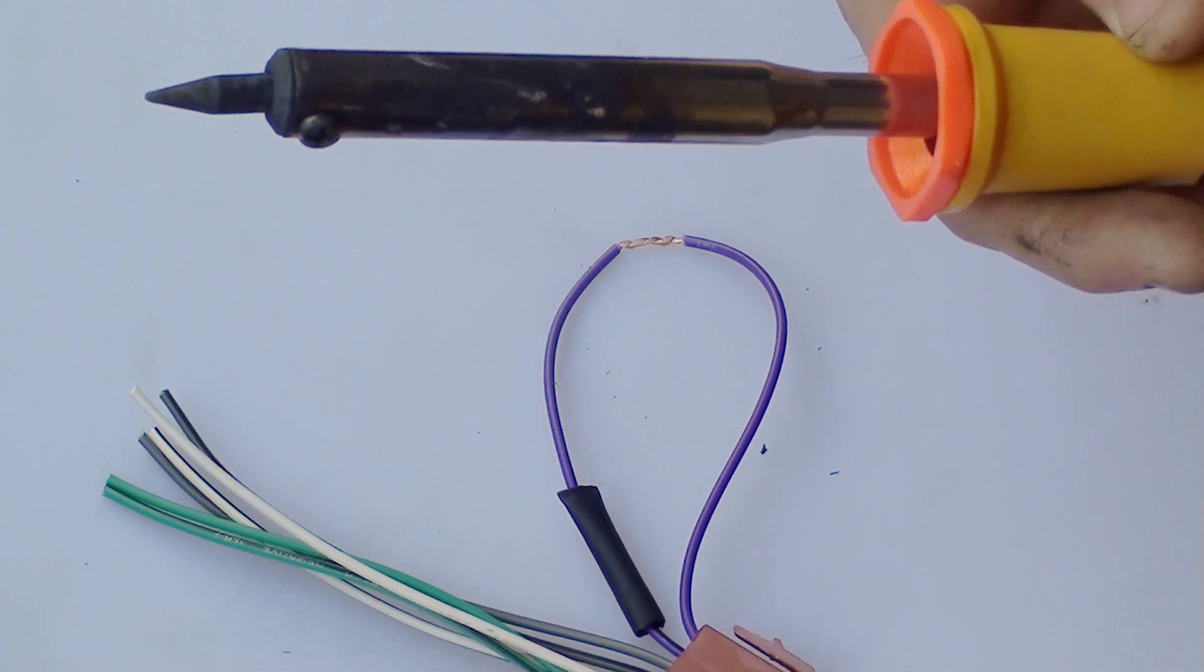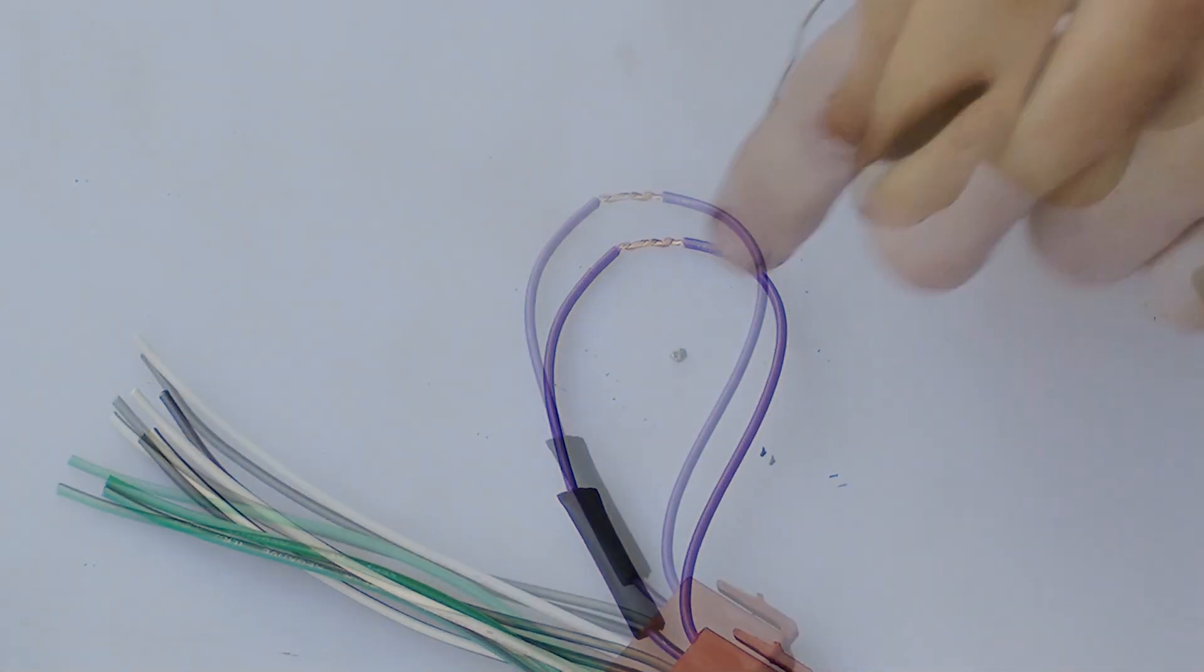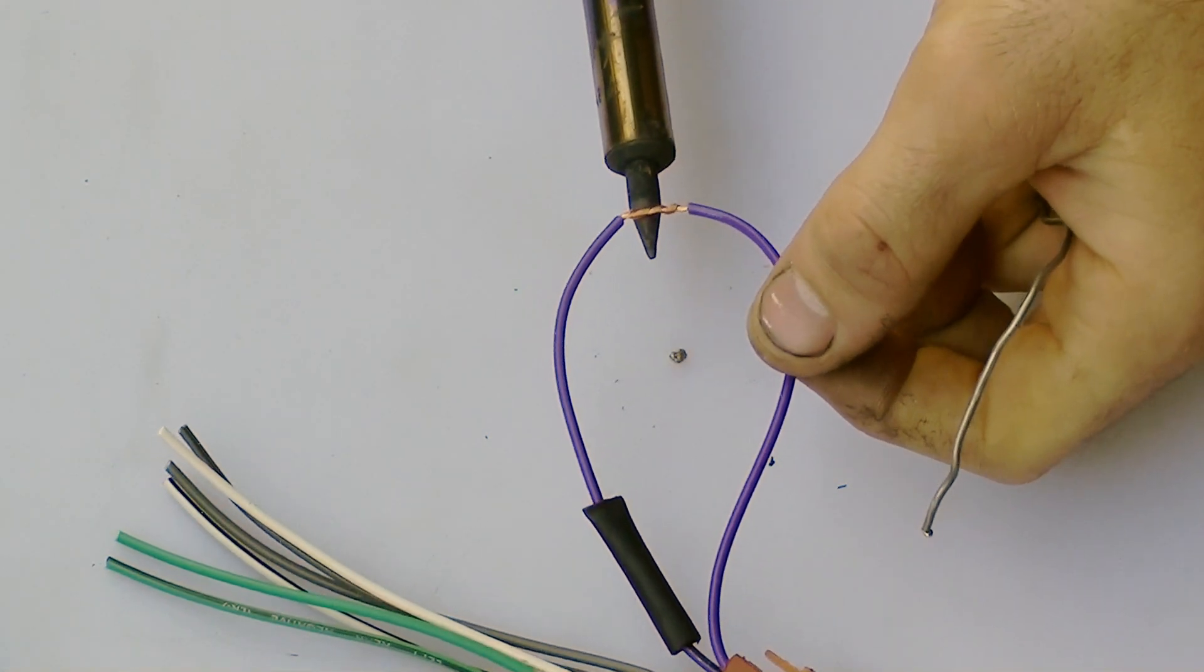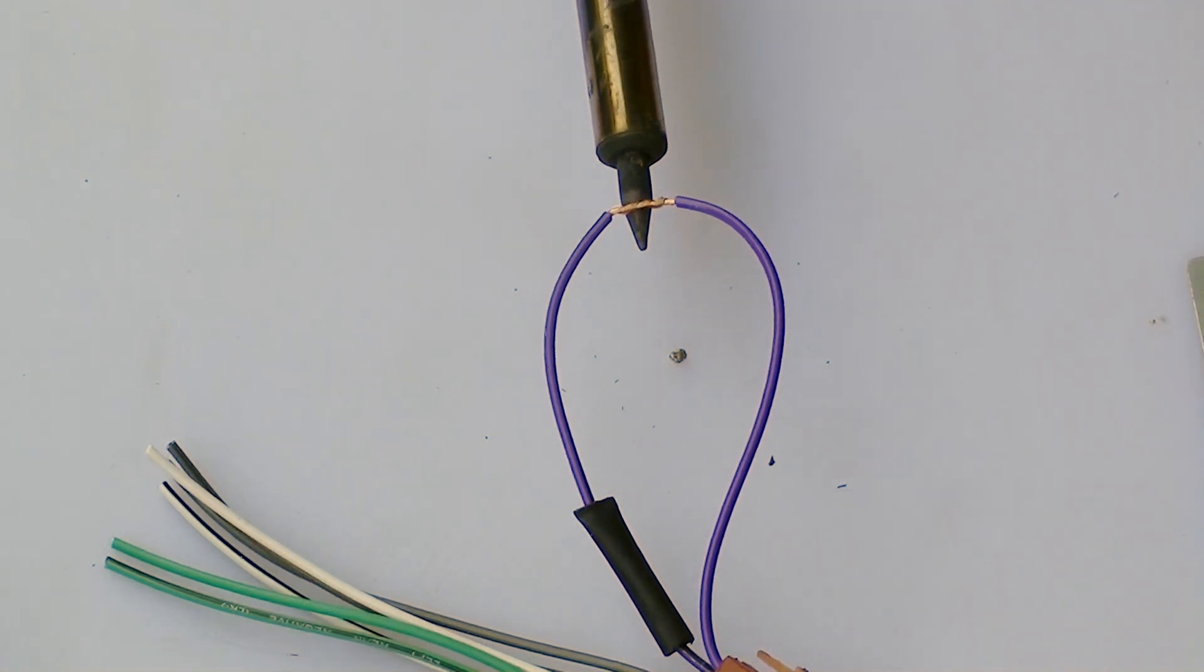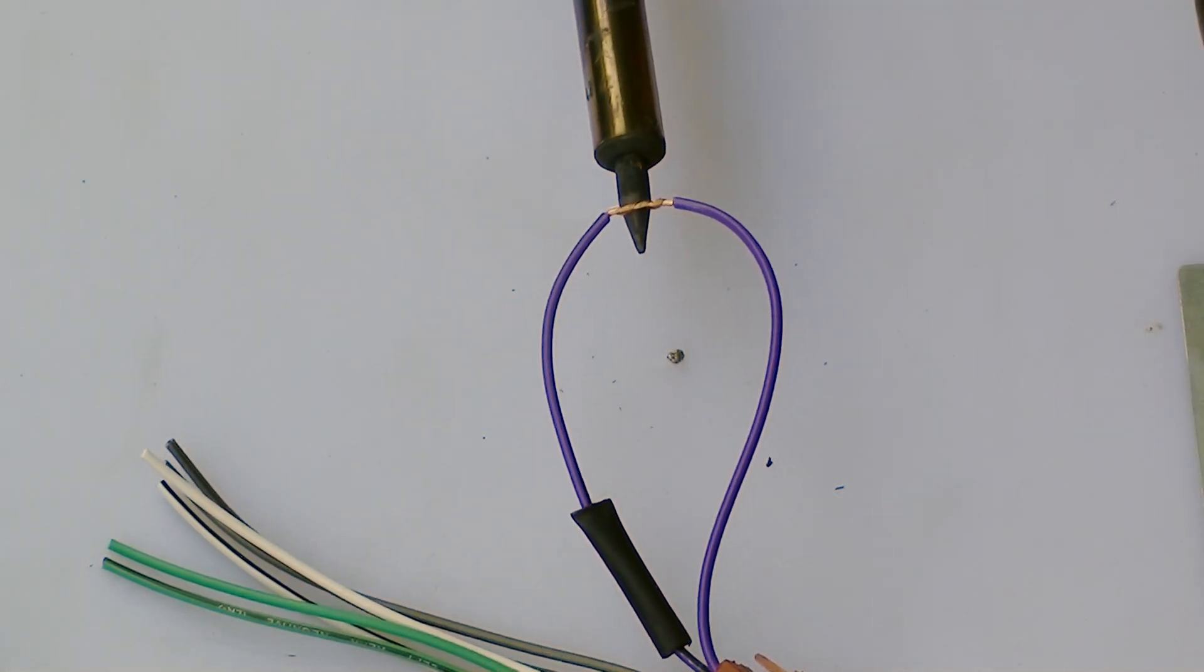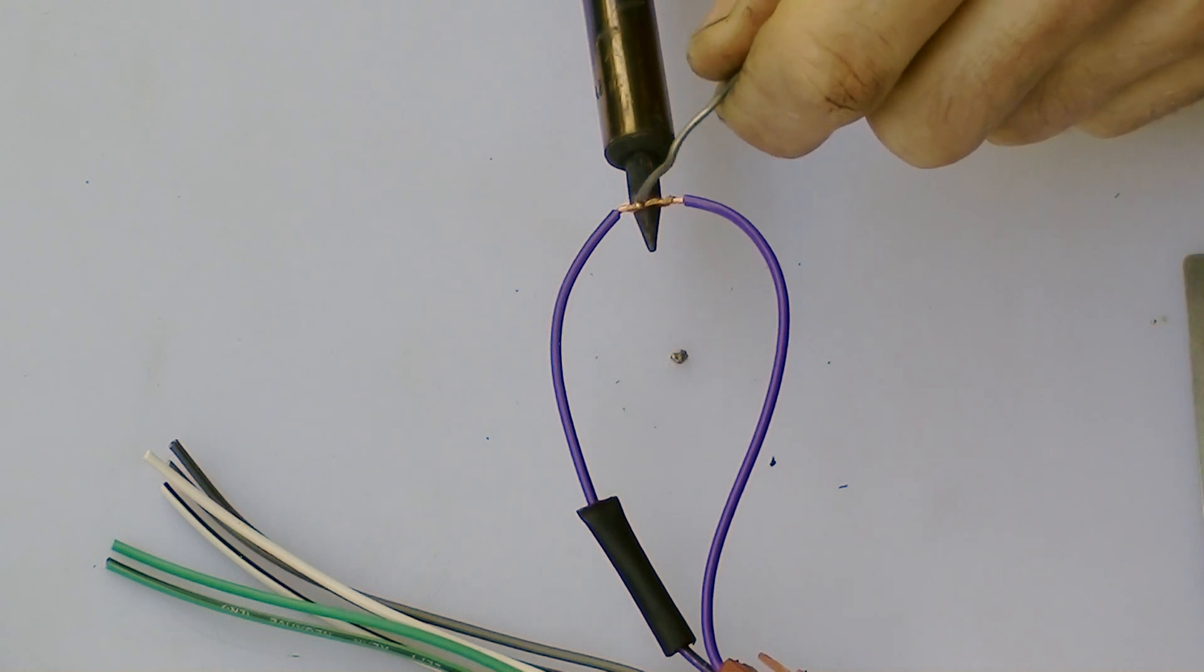So the soldering iron is nice and hot now so it's ready. Just hold it underneath the wiring until it heats up the wiring enough to be able to absorb the solder through the wiring.